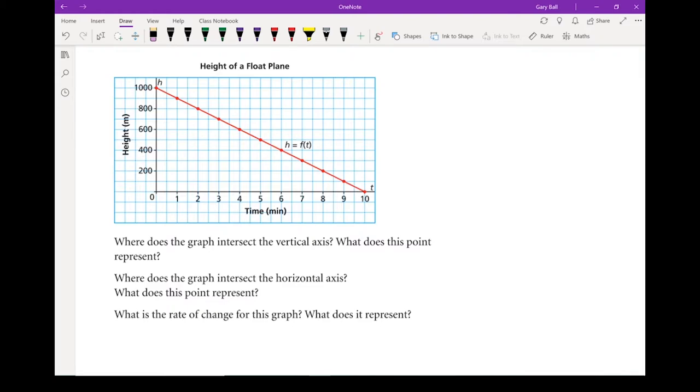So where does the graph intersect the vertical axis? Well, if this is my vertical axis right here, it intersects it up at a thousand meters. That is our starting point. That is the same as the starting point would be in our equations like we did in last section. That's where it starts. That represents the height of the airplane when we started recording this.